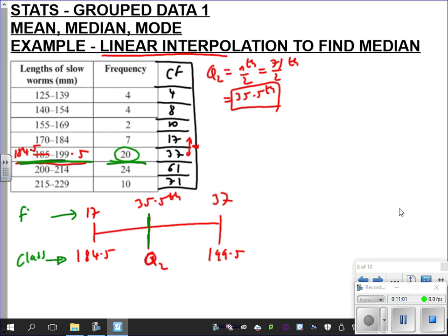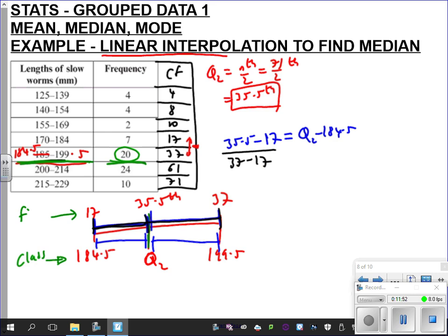So let me show you what I mean here. So can you see that this ratio here, so 35.5 minus 17, must be the same as this proportion over here. So this must be the same as Q2 take 184.5. Likewise, this proportion over here must be the same as this proportion over here. So essentially what we're saying is that this proportion, 17 to 35, over this whole line here, so 37 subtract 17, must be the same as this proportion here over the whole line. Can you see?